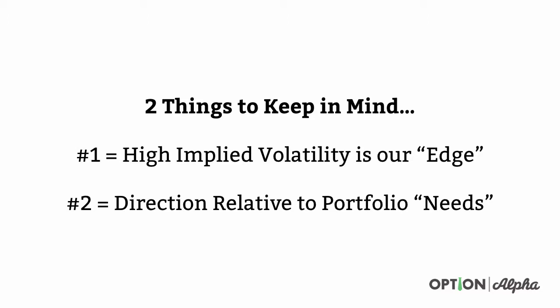That's our edge as options traders. Number two: we have to keep in mind the direction relative to portfolio needs. As we've shown before in videos, you can make a trade in any direction with options and have the same probability of success and relatively the same premium or profit potential based on risk — whether bullish, bearish, or neutral. So what you have to keep in mind is that if you're going to make a directional trade, you have to make sure that it fits well into your overall portfolio.